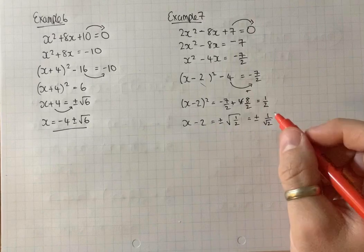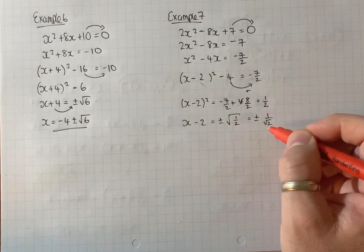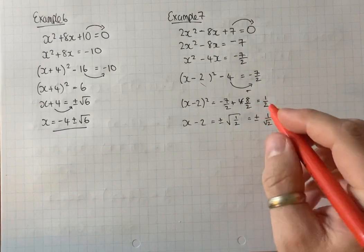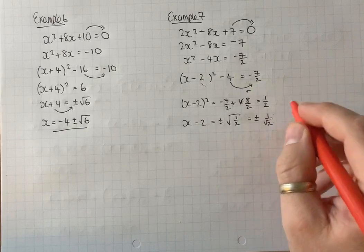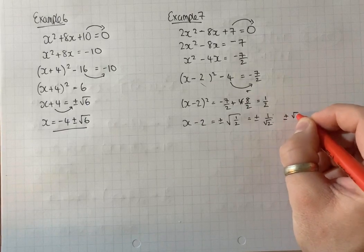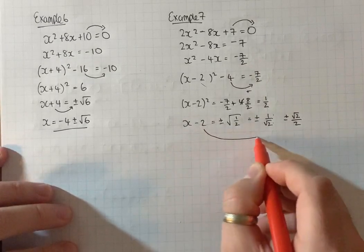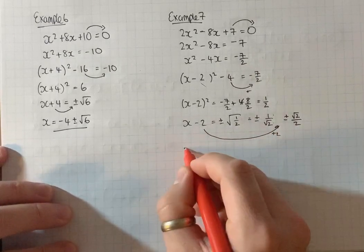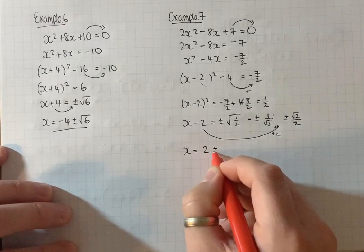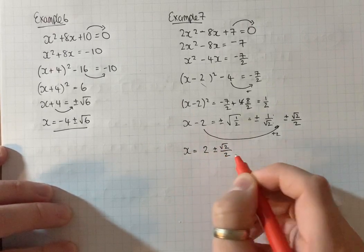And you don't particularly like leaving surds as denominators, as we learned when we looked at rationalized denominators. So times top and bottom by root 2. You're going to get root 2 over 2. And then bring the minus 2 over as plus 2. x equals 2 plus or minus root 2 over 2.